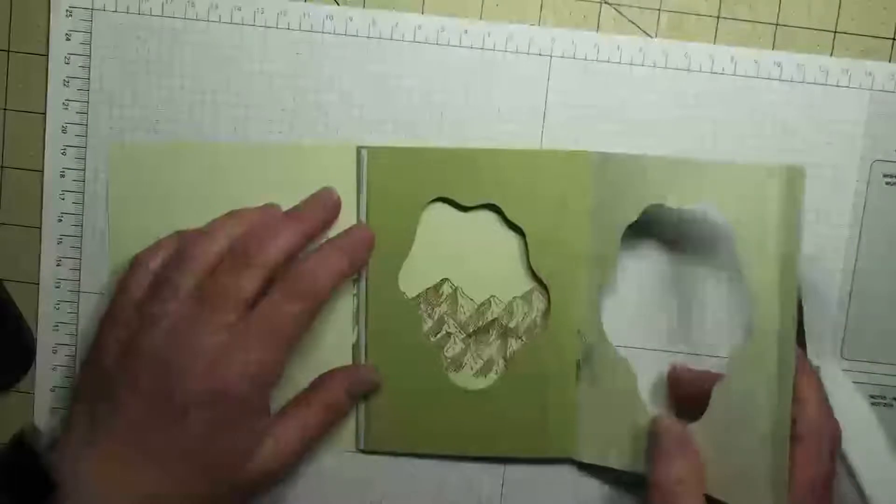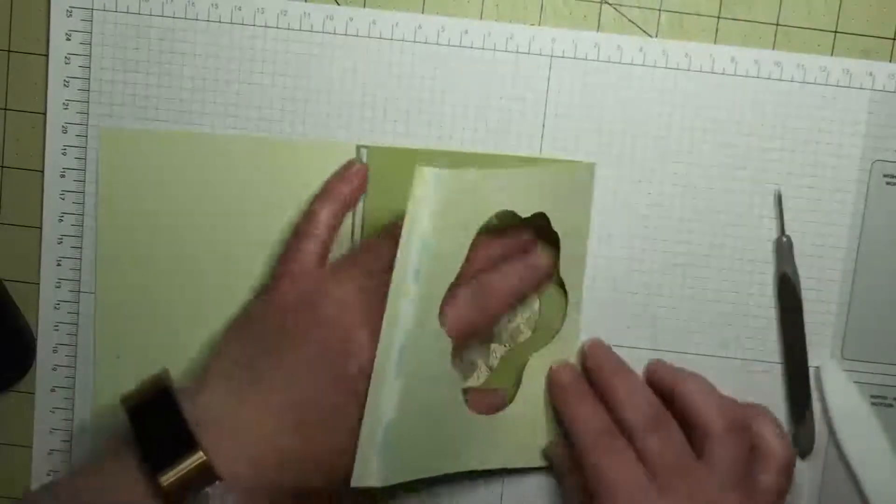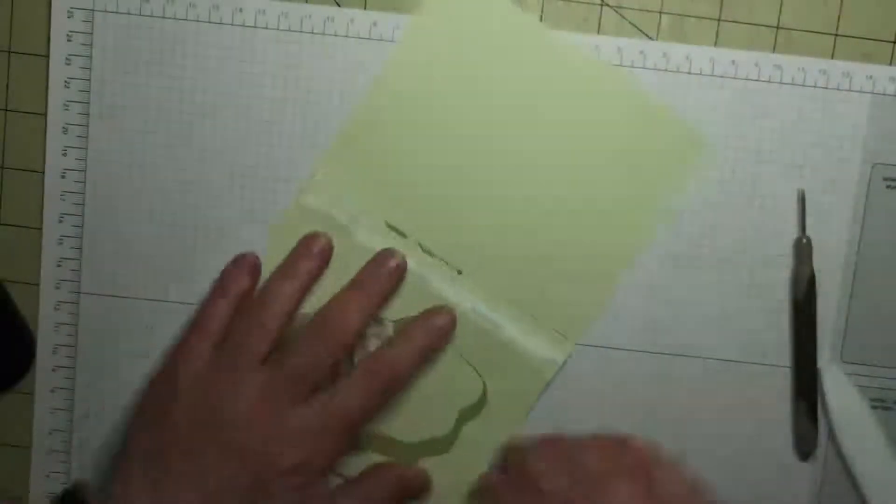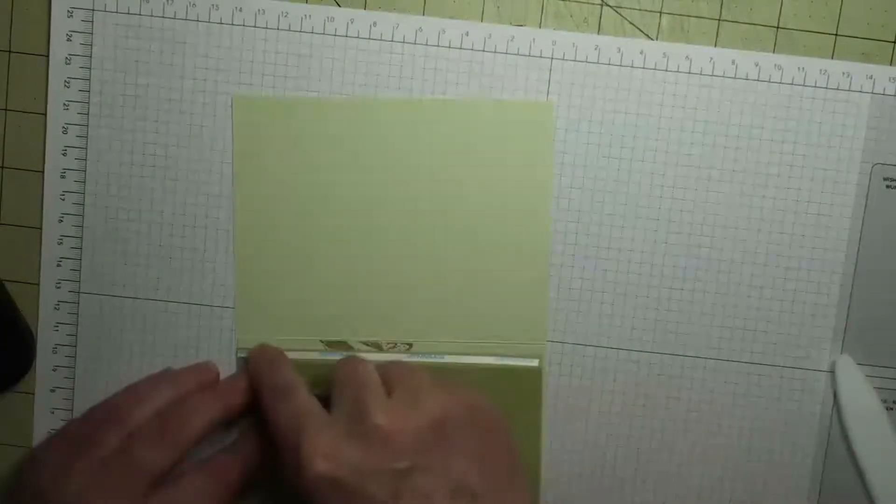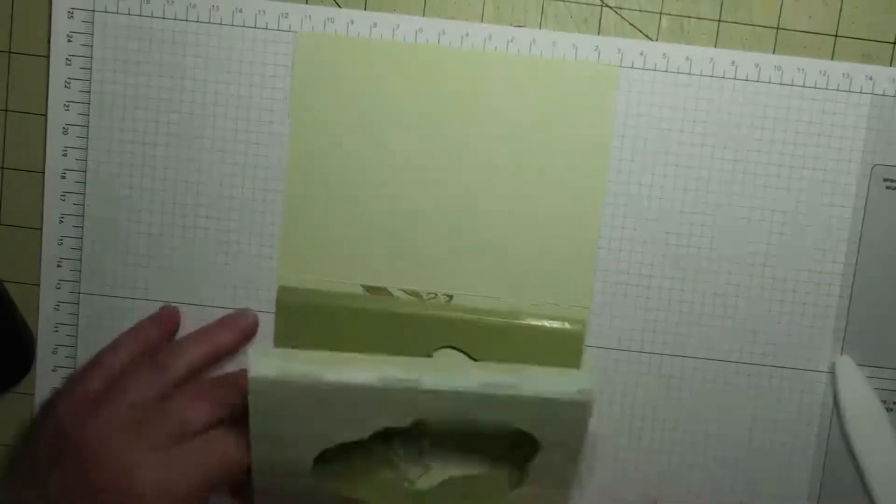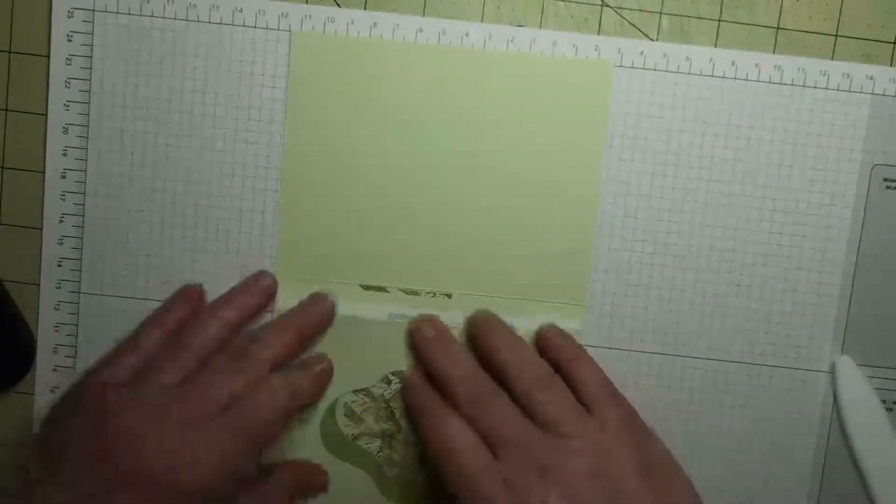So now I've got this. Now I'm going to bend it at the next score line, so I'm bending it like that. And then I'm going to release the second backing on my middle piece and close the card like this.